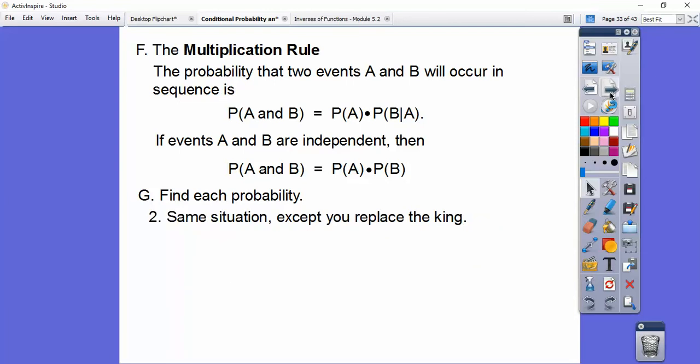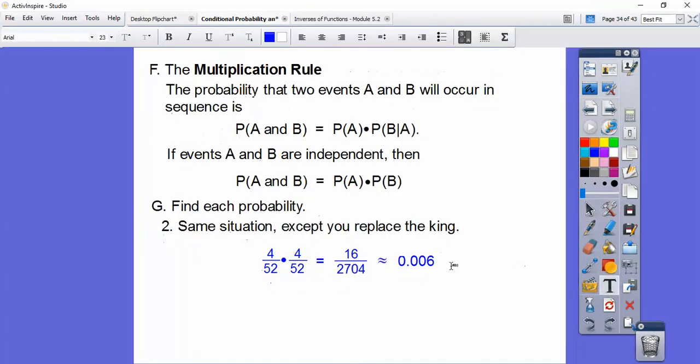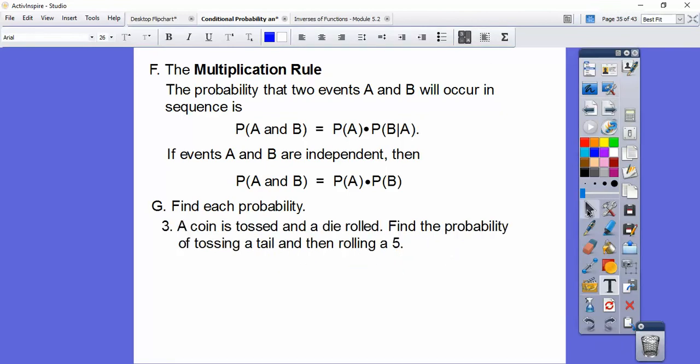Same situation, except we replaced the king. Well, that's just going to be 4 out of 52, and since there's four cards out of 52 cards, because you replaced it, you get that. It can't be the same answer. I think I made a mistake right there. So 16 divided by 2704. Yeah, it's not that. It's .006. So anyways, I think I made a mistake on that. I don't know what I was doing. Same thing. So whatever 16 divided by 2704 is. My bad.